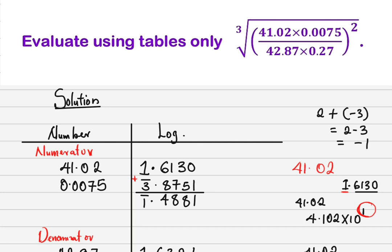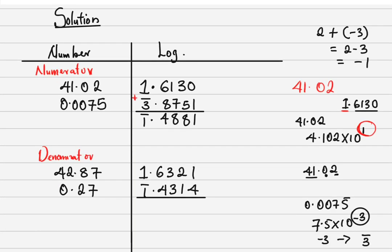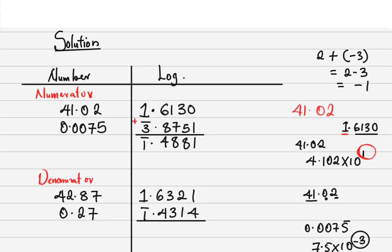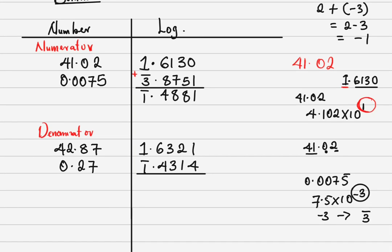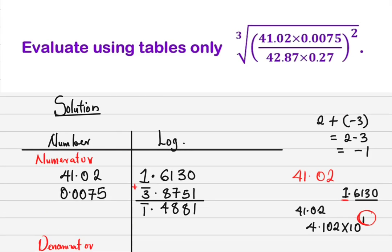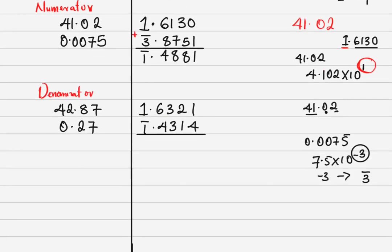The same process applies to the denominator. The denominator numbers are also multiplying, so we add their logs. Adding gives: 5, 3, 6, 0, then 1+1=2, and 2 plus minus 1 is 1. So the log of the denominator is 1.0635. We are done with this part.